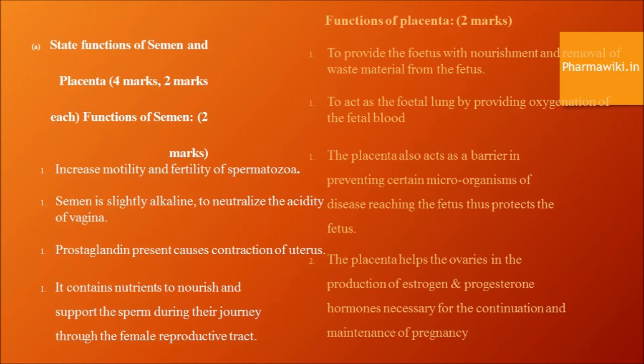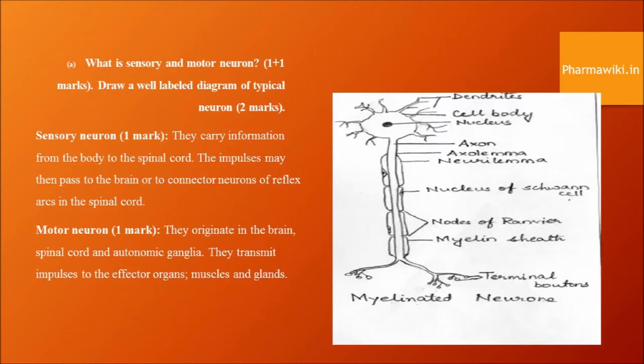Sensory and motor neurons. Sensory neurons carry information from the body to the spinal cord; impulses may then pass to the brain or connector neurons of the reflex arc in the spinal cord. Motor neurons originate in the brain, spinal cord, and autonomic ganglia, and transmit impulses to effector organs like muscles and glands. You need to learn the diagram of a neuron and label it neatly in your examination.